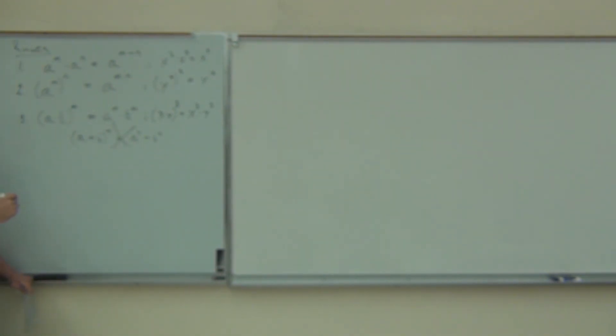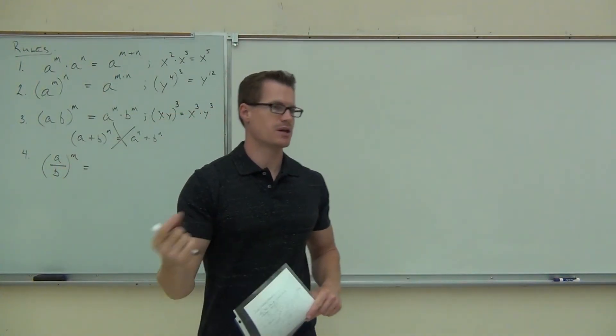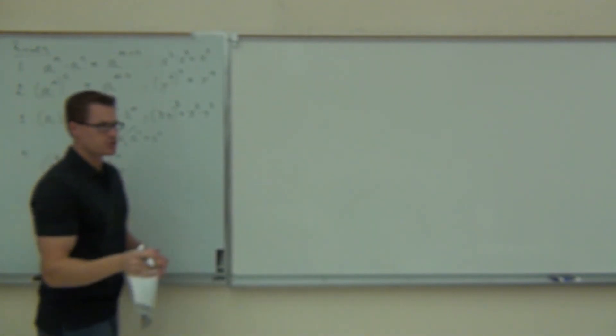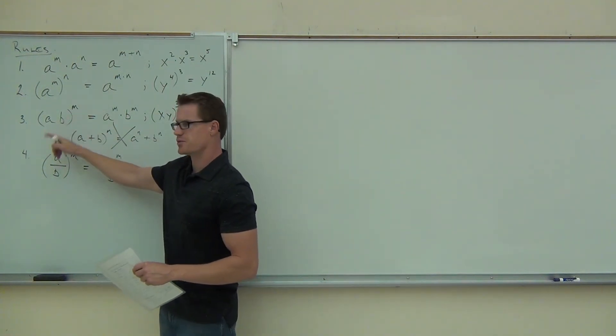Back to our rules here. If I have some fraction to an exponent, what we need to know is that just like here where we had the product, and you have your product raised to the m power, if I have a fraction raised to the m power, both the numerator and the denominator get raised to that power as well. We've talked about that before in this class, so we're just going to write a to the m over b to the m. It just goes to both the numerator and denominator. Very similar to this one. It's just you're dealing with a quotient instead of a product.